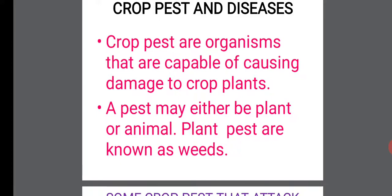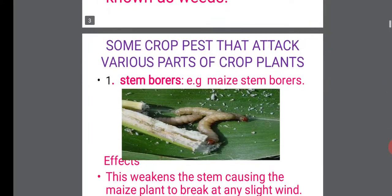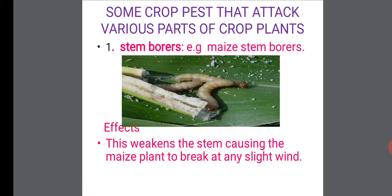Let's look at the definition. Crop pests are organisms that are capable of causing damage to crop plants. A pest may either be plant or animal. Plant pests are known as weeds.